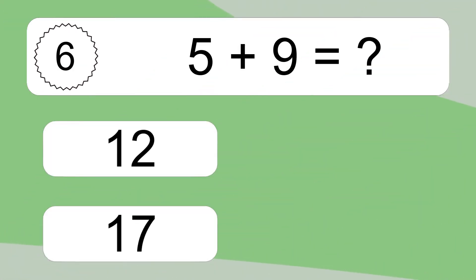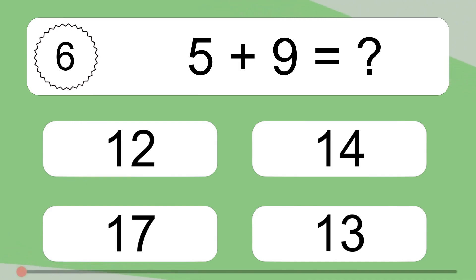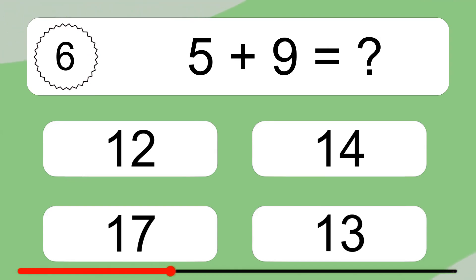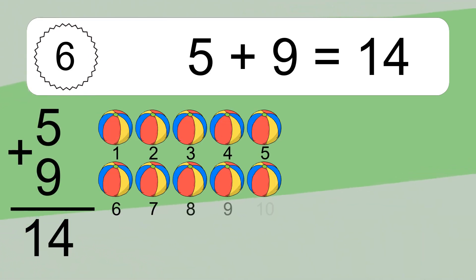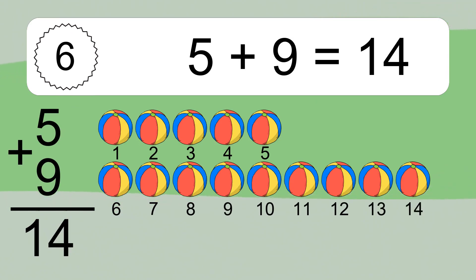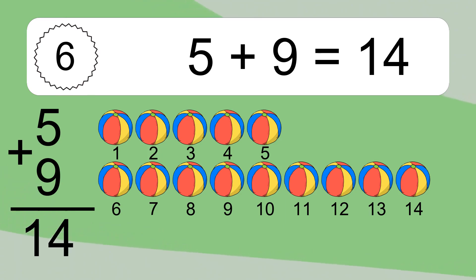5 plus 9 equals what? 5 plus 9 equals 14. Let's count it. 1, 2, 3, 4, 5, 6, 7, 8, 9, 10, 11, 12, 13, 14.